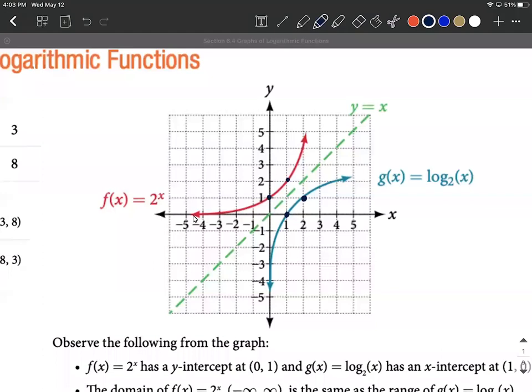Exponential functions had a horizontal asymptote. We got close to the x-axis out this direction. Whereas logarithmic functions have a vertical asymptote at the y-axis. We get very close to the y-axis but don't cross it. That's going to be at x equals 0 for a vertical asymptote unless it gets moved.